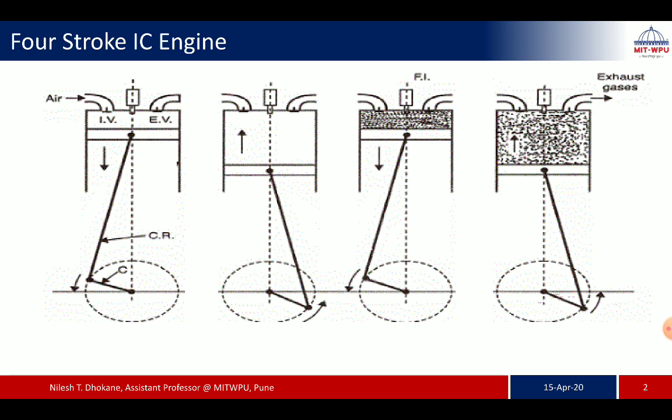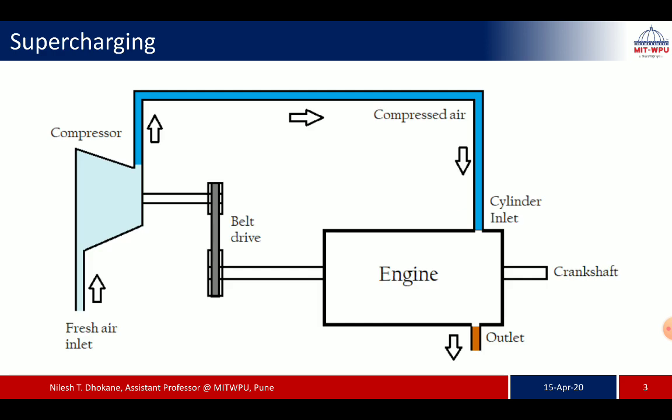More air means more power output and better mileage in automobile IC engines — this is also related to volumetric efficiency. As we go to high altitudes, the density of air decreases and less air is taken inside during the suction stroke, which hampers the power output, volumetric efficiency, and vehicle mileage. That is why we need to do supercharging.